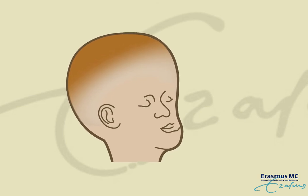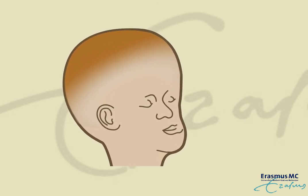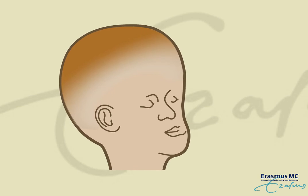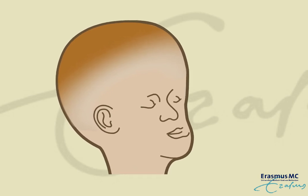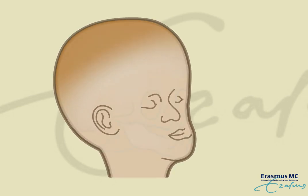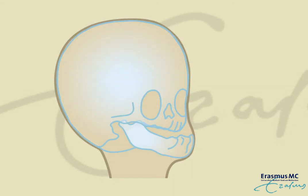For some patients, it's necessary to advance the mid-face as well as the forehead and upper part of the orbits. This combination is known as a monoblock procedure.